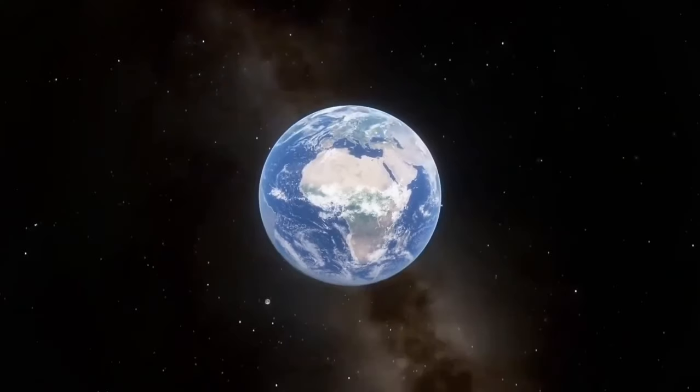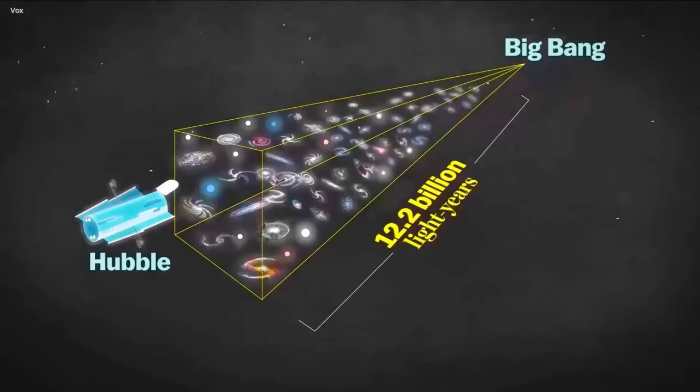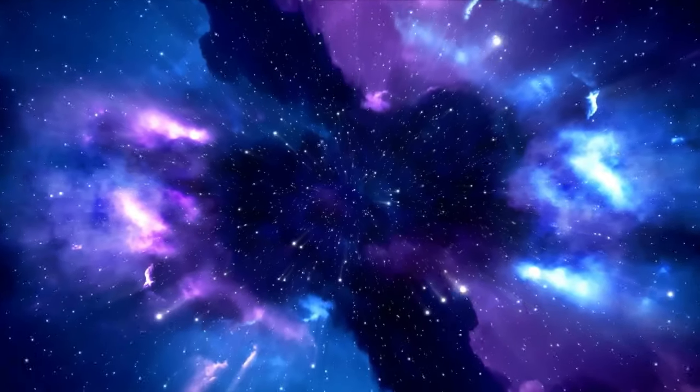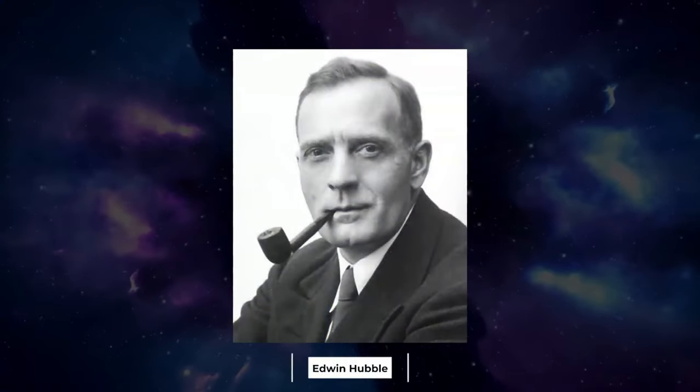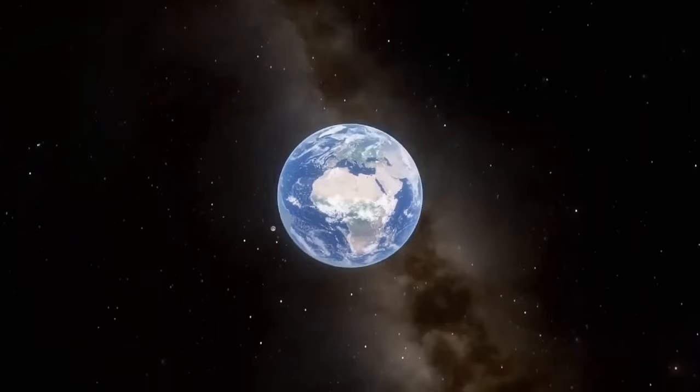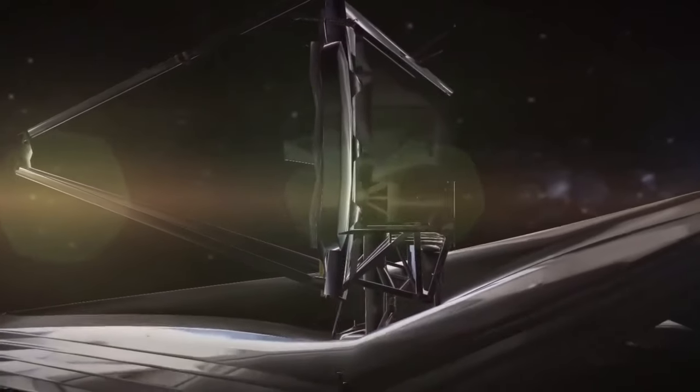To see this era we'd need a time machine, and astoundingly we have one: telescopes. Light travels very quickly, but galaxies are so far away that it takes their light millions or even billions of years to reach us. The farther they are from Earth, the longer it takes for their light to reach us. So, in a sense, when we glimpse their far-flung photons, we see backward through time.